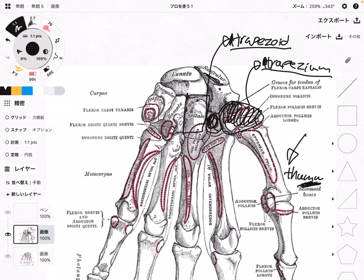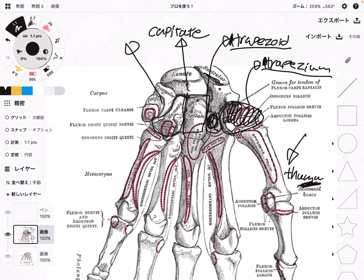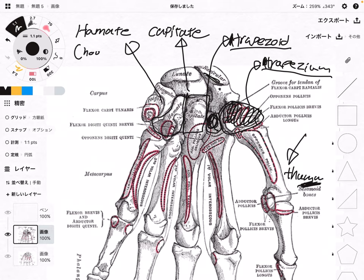Then this one is the capitate. And next to capitate, this one is the hamate, which means hook-shaped. So the second row is: trapezium, which has articulation with the thumb; trapezoid; capitate; and hamate.